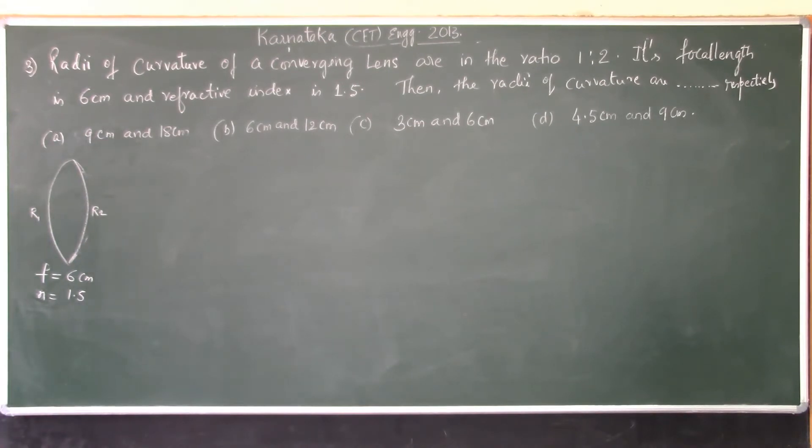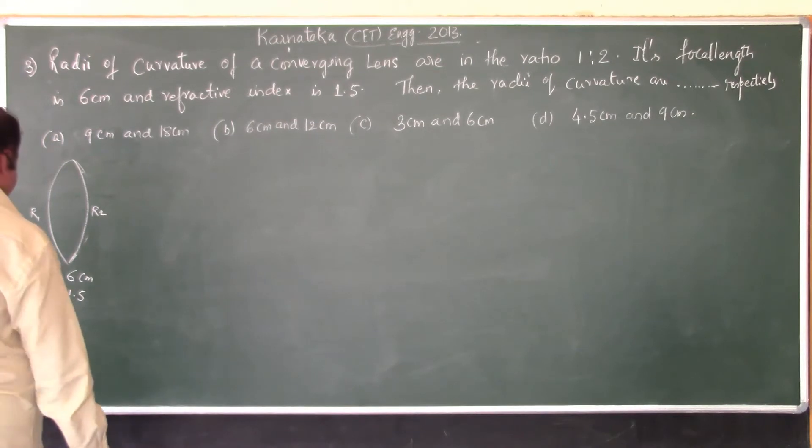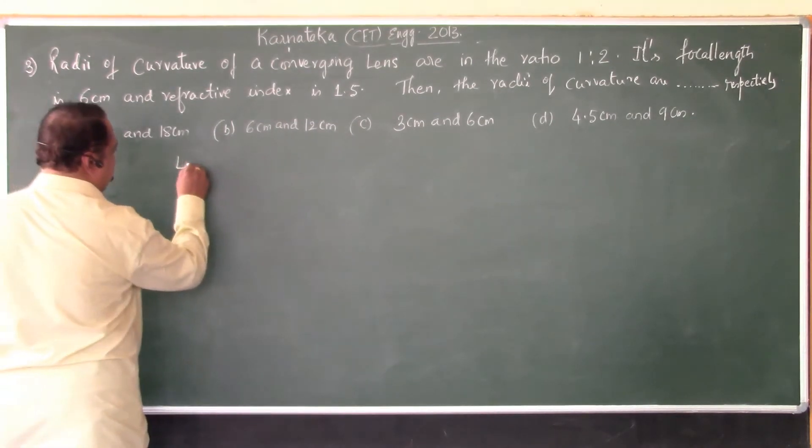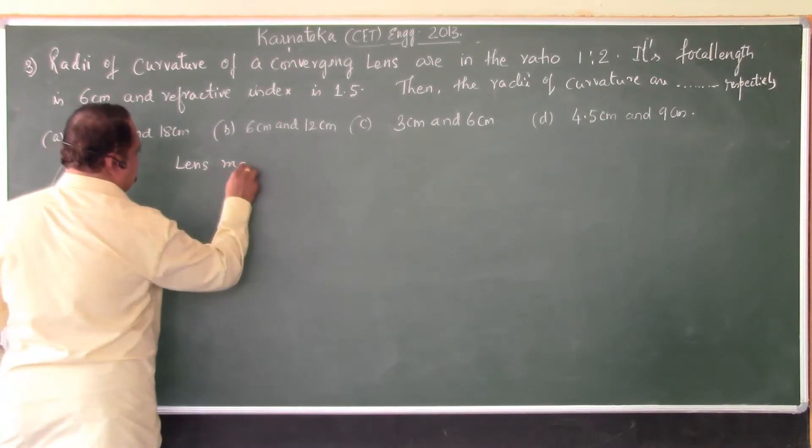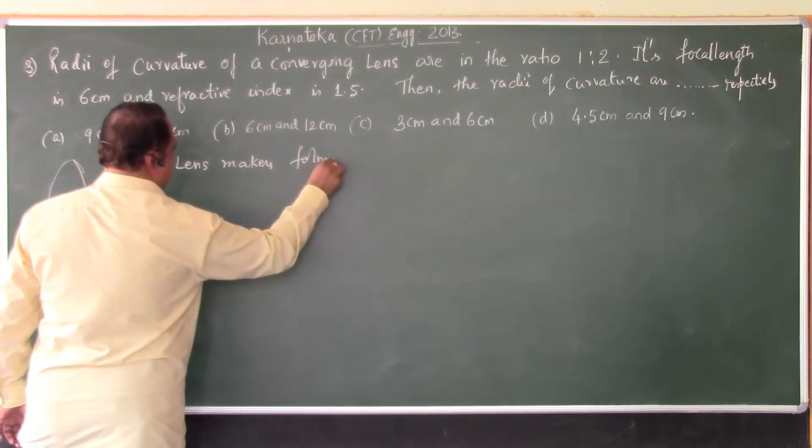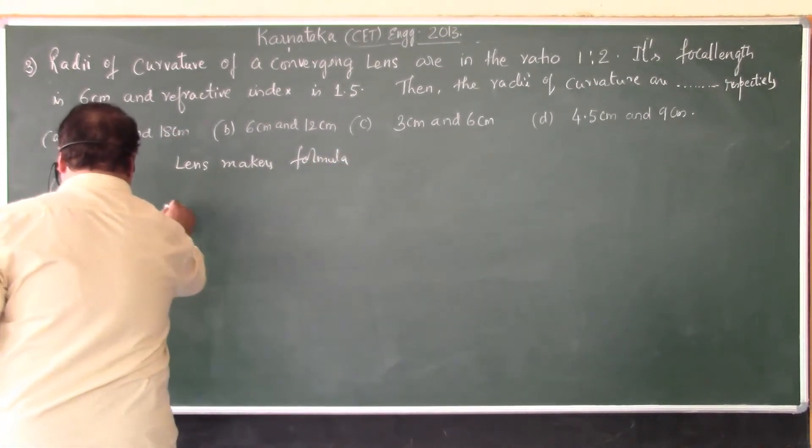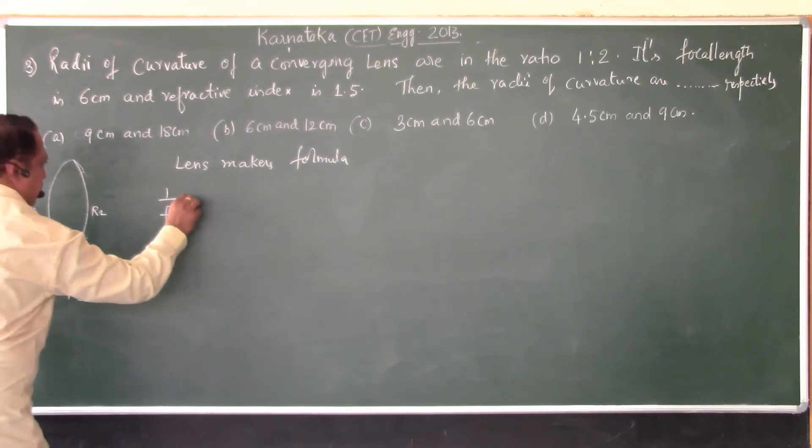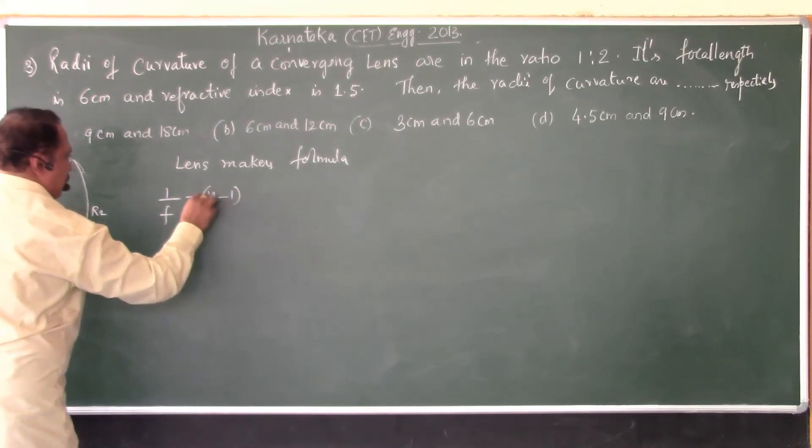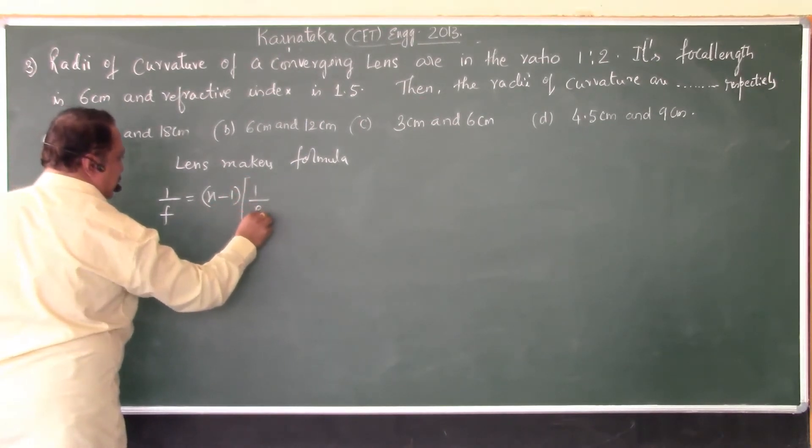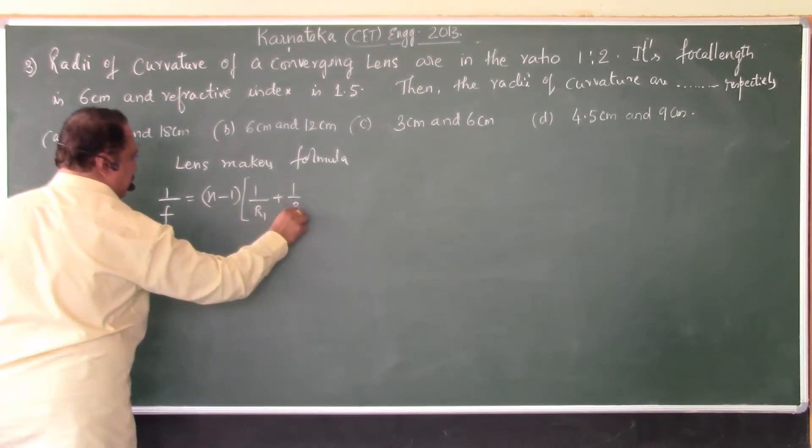This is in fact a direct problem, very simple direct substitution problem. To find the radii of curvature we make use of lens makers formula. You know the lens makers formula as you all know is 1 by f, that is 1 over focal length, is equal to n minus 1 times into 1 by R1 plus 1 by R2.